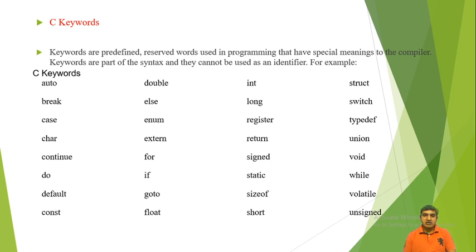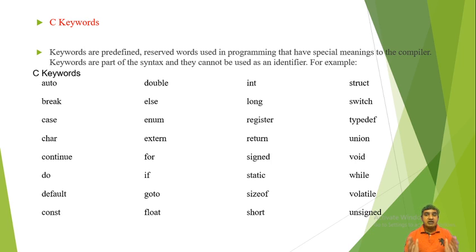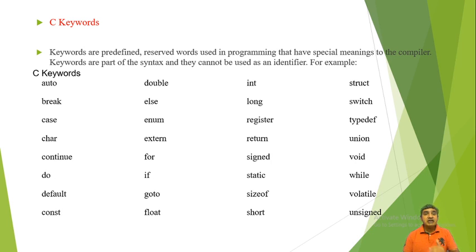More keywords include: float, int, long, register, return, signed, static, sizeof, short, struct, switch, typedef, union, while, volatile, unsigned. These 36 keywords are predefined and reserved — they cannot be used as identifiers because they have predefined meaning to the compiler.